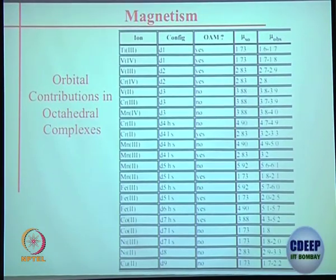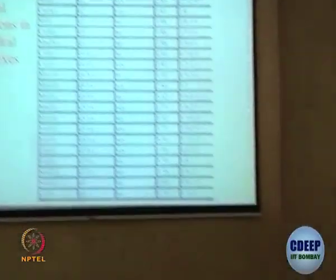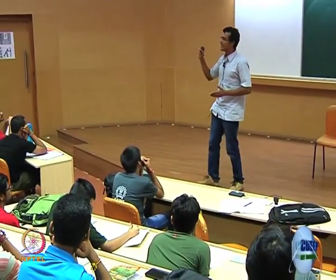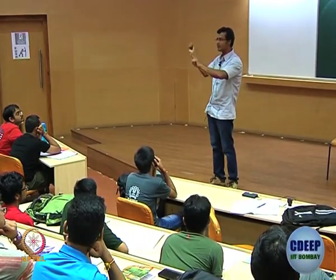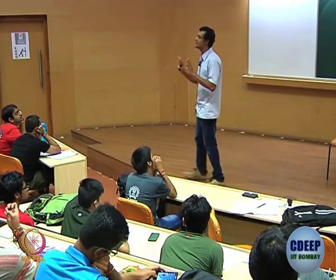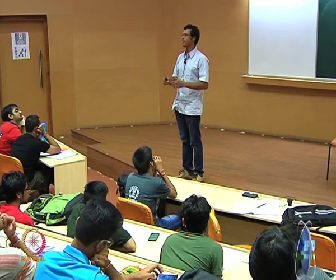You cannot directly compare octahedral versus tetrahedral because the splitting between e and t2 is less in tetrahedral. This is the observed value and this is the calculated value — that is the maximum you get. The expected value should be a little bit higher, but it is not, because some quenching is there. We are not going to trick you — observed can sometimes be less than calculated due to quenching by spin exchange, which will be discussed.